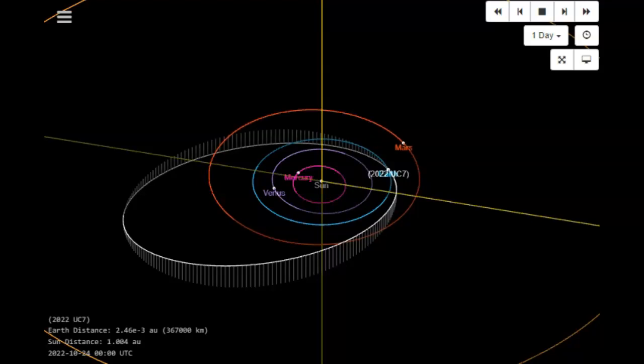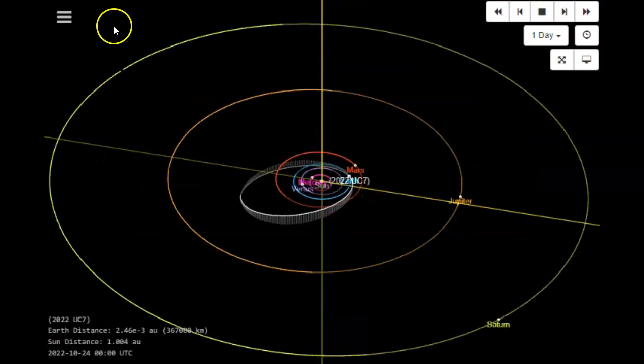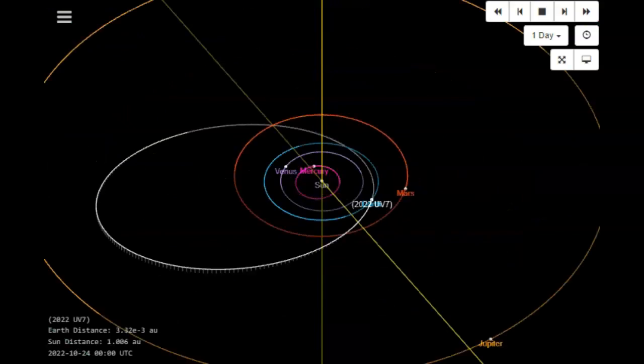Now they've given us just a few hours notice on the second rock. Heading over to 2022 UV-7 instead of UC-7, we see that it also is inbound for tonight. It's going to be a smaller rock, luckily. It's going to be a smaller rock at about 20 feet in diameter. It's moving faster at about 13 kilometers per second.